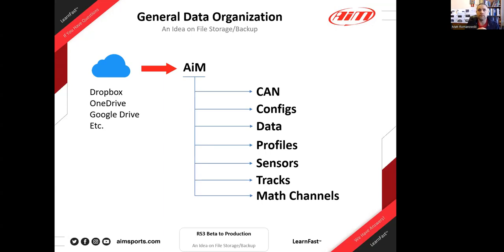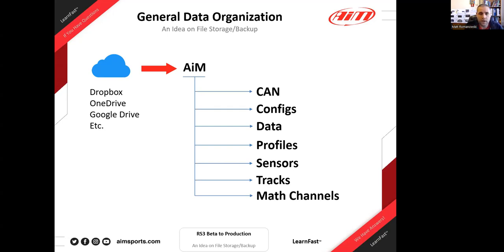Whether you use Dropbox, OneDrive, Google Drive — there are many options. The idea is to put your data there under a master folder called 'AIM,' with subfolders for configurations, data, profiles, sensors, tracks, and matchings. This is a great approach if you have a laptop for the track, a computer at the shop or home — sharing across a cloud drive means you can grab that information everywhere.